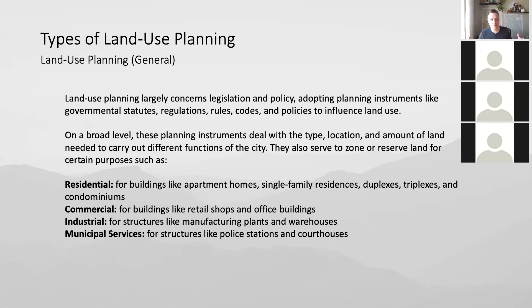The general forms of zones or designations you would give to an area include residential — dwellings where people live: houses, townhouses, condo buildings, apartments. Commercial — stores, storefronts, retail shops, office buildings. Industrial areas involving light industrial, like needing a garage to store equipment, or heavy industrial where you're actually doing manufacturing. Then there are municipal services: schools, police stations, fire stations, courthouses. These are very general and often overlap — a lot of municipal buildings are just office buildings.